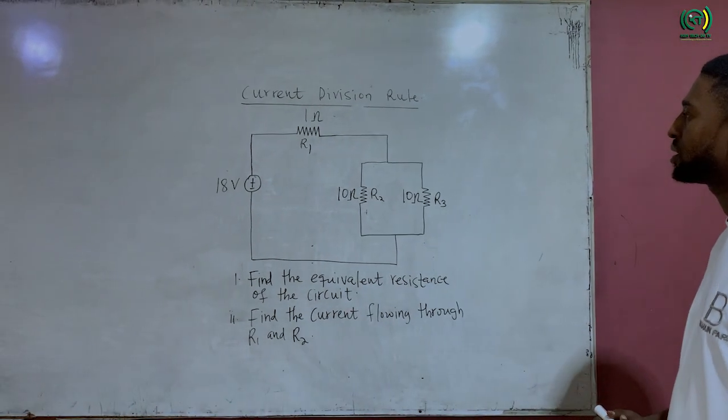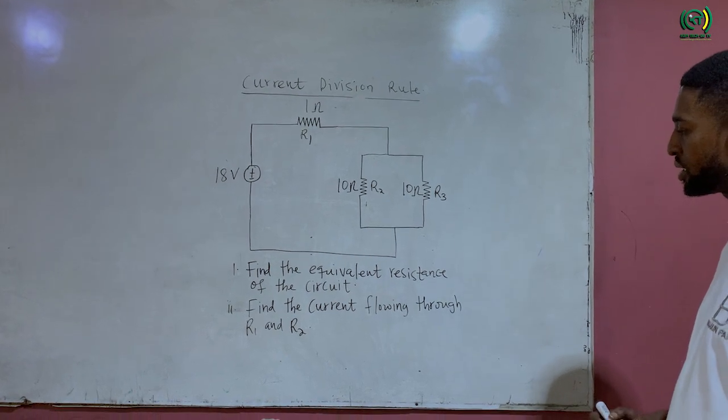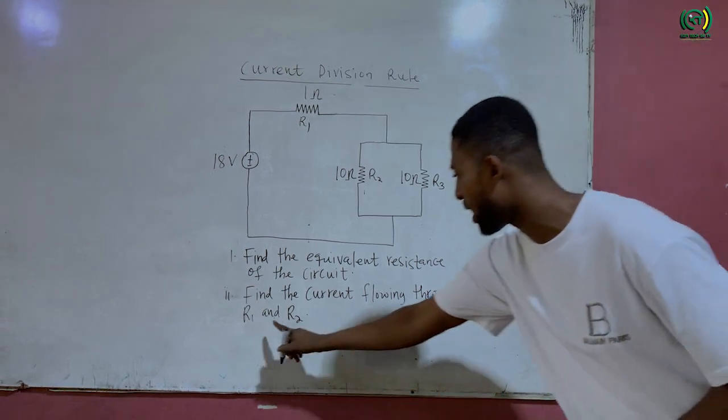Simplify this circuit. And we are supposed to find the equivalent resistance of the circuit. Then find the current flowing through resistor R2 and R3.